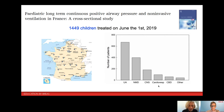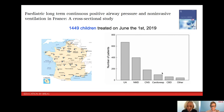There is a notable change in the frequency of disorders. The most common diagnostic group were children with upper airway obstruction, with more than around 700 children treated for these disorders. The second group were children treated with NIV for neuromuscular disease, followed by children with disorders of the central nervous system, then children with cardiorespiratory disease, children with congenital bone disease, and some other more rare disorders.